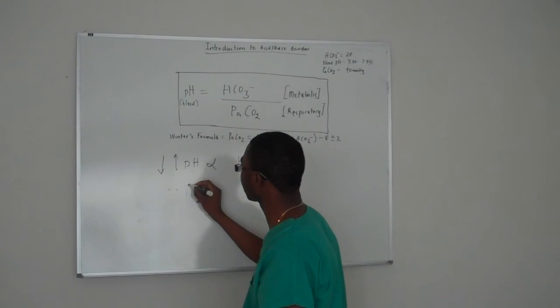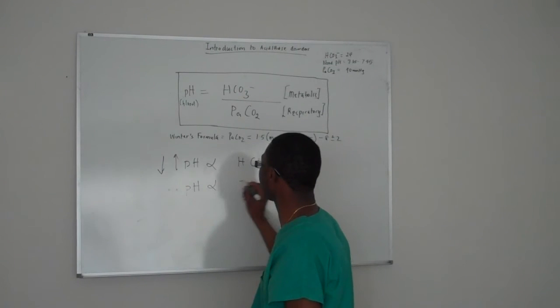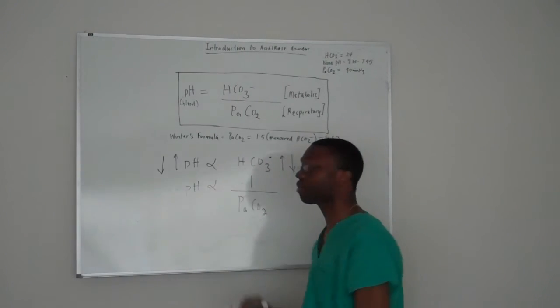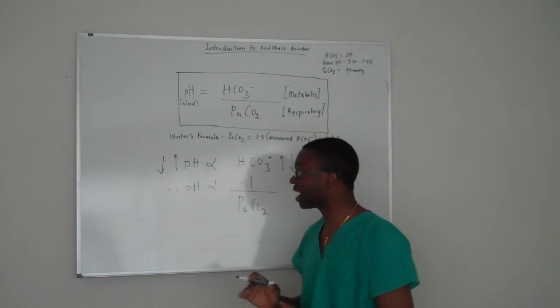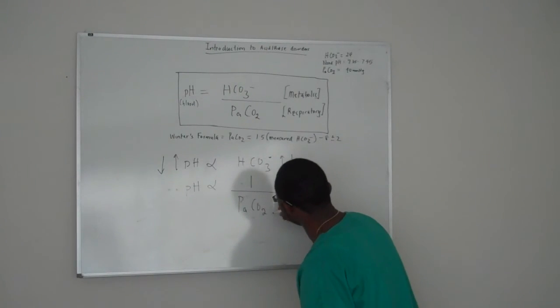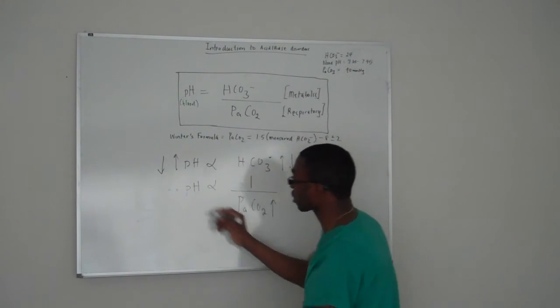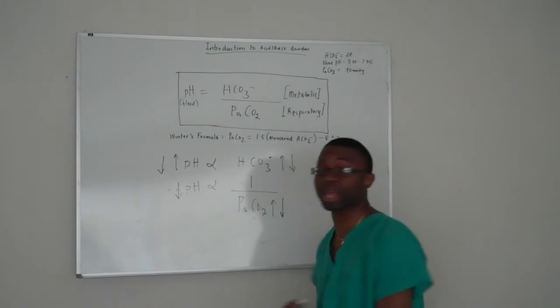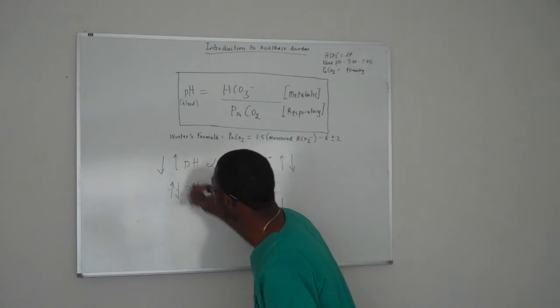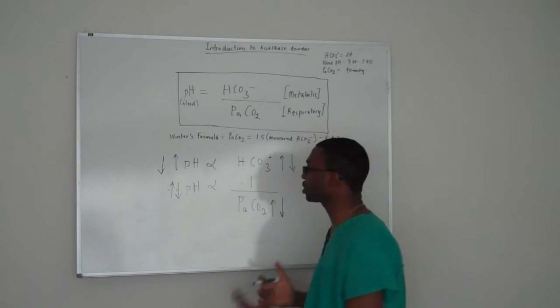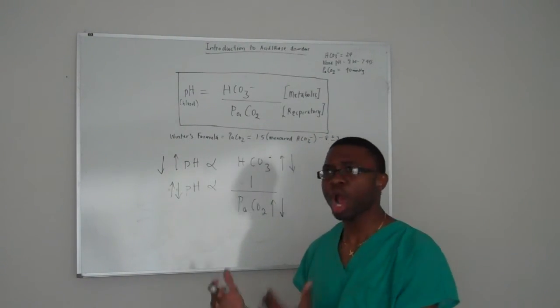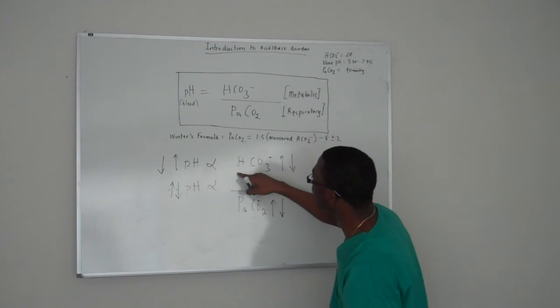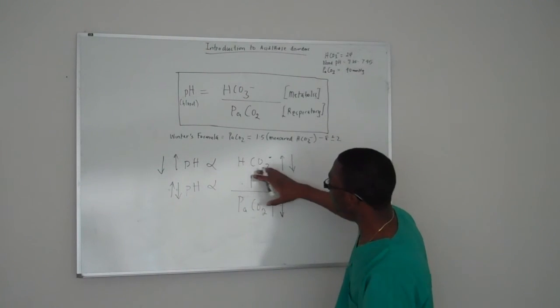Now let's take pH and PCO2. pH is actually inversely proportional to arterial partial pressure of carbon dioxide. That means if PCO2 goes up, since it's inverse, automatically your pH has to drop. If PCO2 goes down, automatically your pH has to go up. This relationship is the bread and butter.